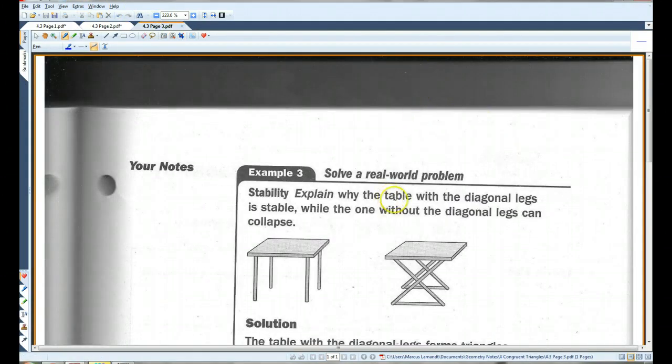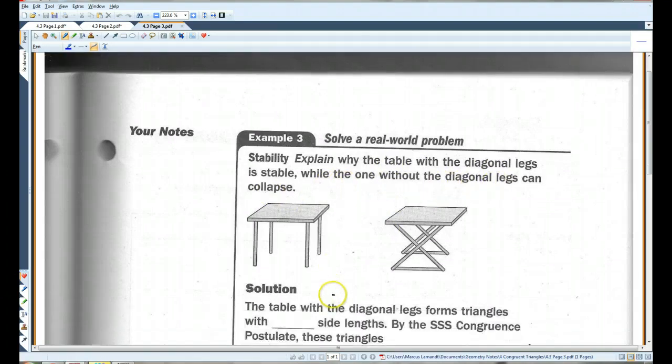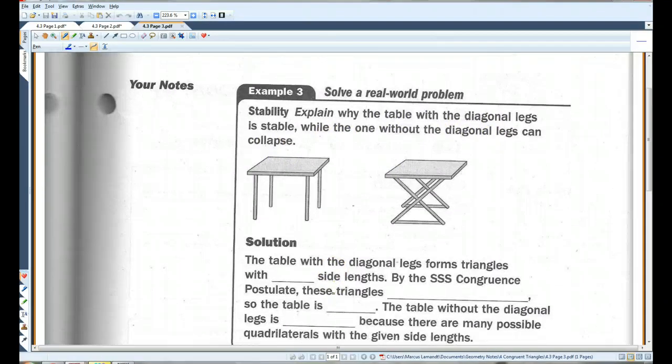Stability. Explain why the table with the diagonal legs is stable while the one without the diagonal legs can collapse. The table with the diagonal legs forms triangles with fixed side lengths. By the SSS congruence postulate, these triangles cannot change shape.